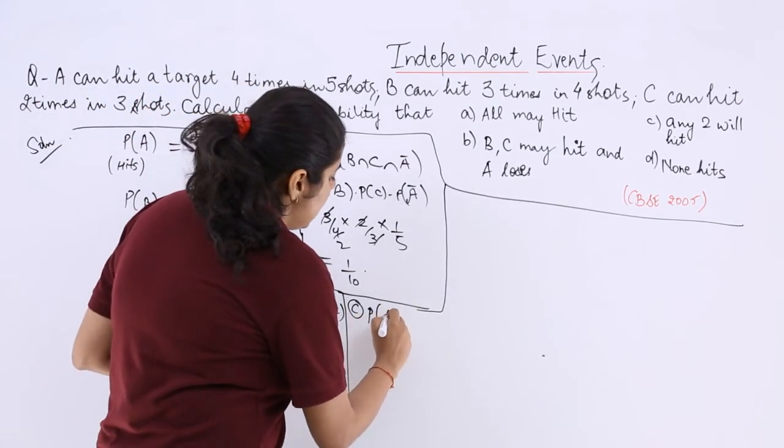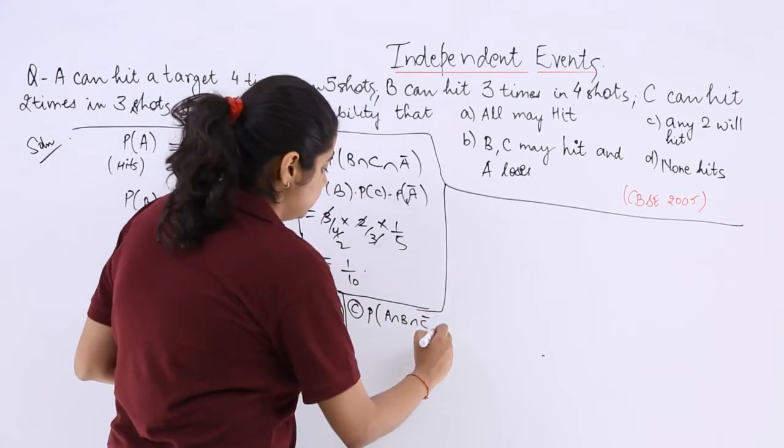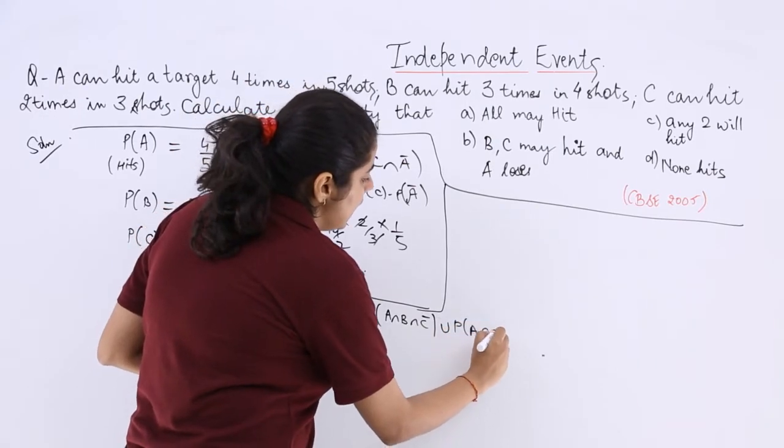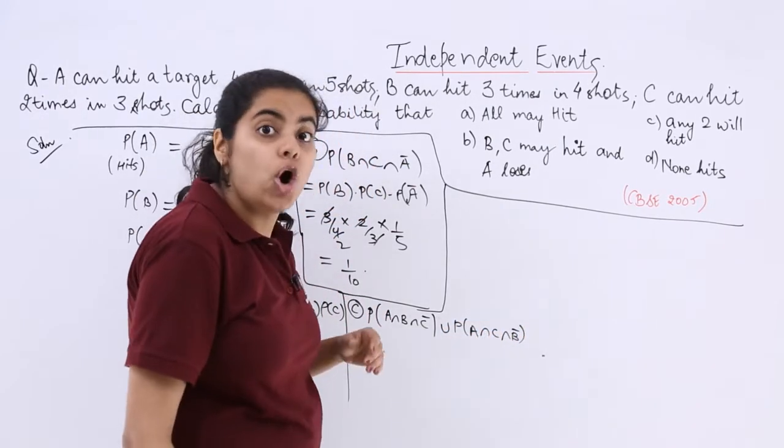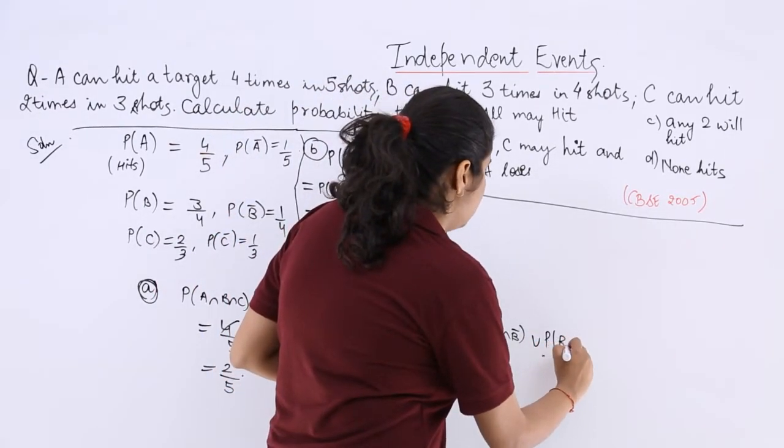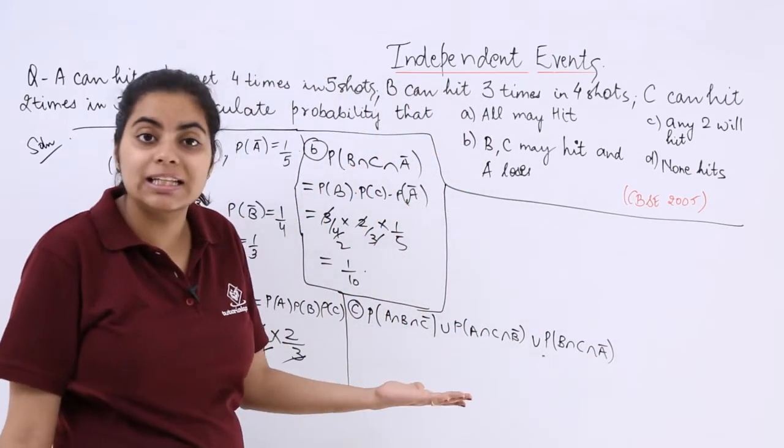That means A and B hitting C will not. Or probability A and C hitting B will not. Or probability B and C hitting A will not. So these are the possible cases.